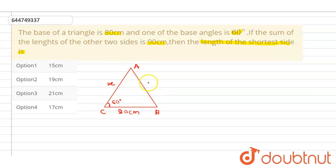then AB will be 90 - x because it is given that the length of the two sides is 90 cm. In this question we need to find the length of the shortest side.